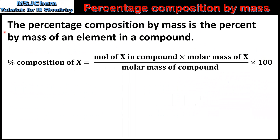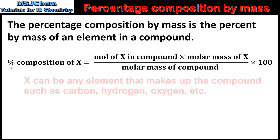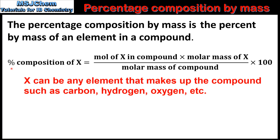Let's start the video with a definition. The percentage composition by mass is the percent by mass of an element in a compound. Here we have the equation we'll use to calculate the percent composition. The percent composition of X in a compound is equal to the moles of X in the compound multiplied by the molar mass of X, divided by the molar mass of the compound, and then multiplied by 100.